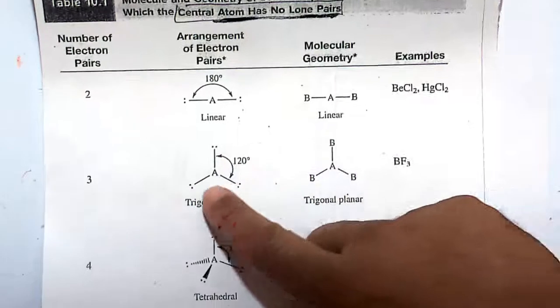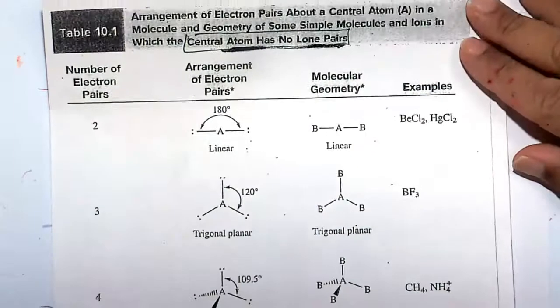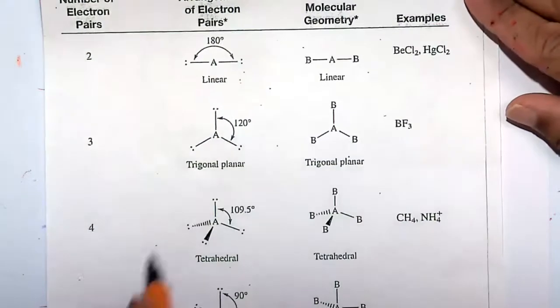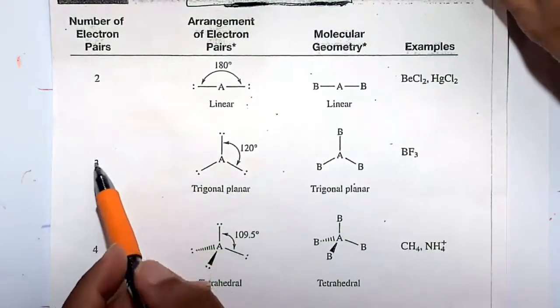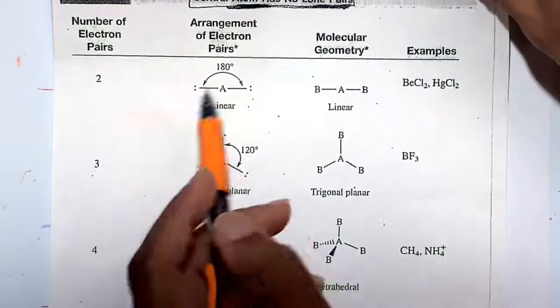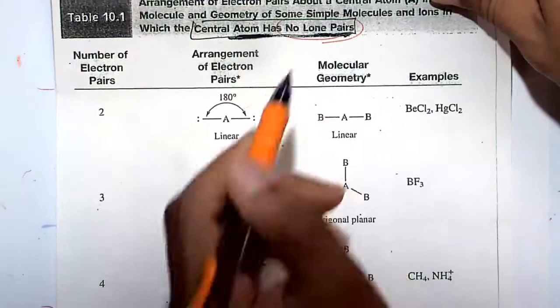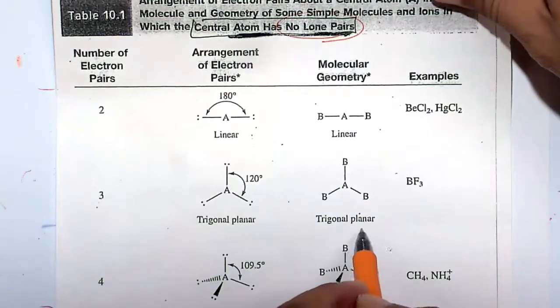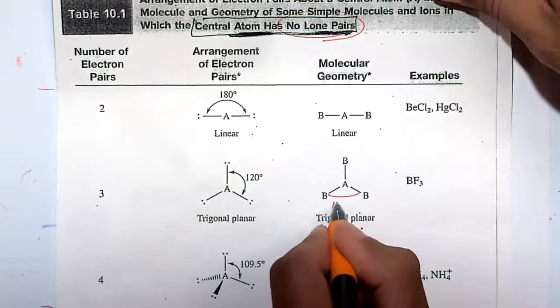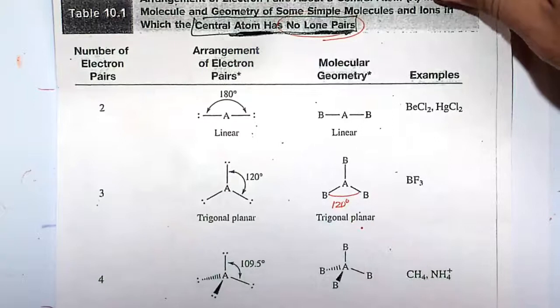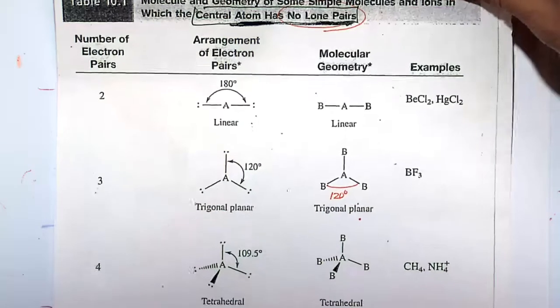So central atom, no lone pairs. Three bonds. Number of bonding pairs is three. Zero lone pairs, as with everything here, zero lone pairs for this table. It's going to be trigonal planar. Trigonal planar. And this will have a perfect angle of 120 degrees.